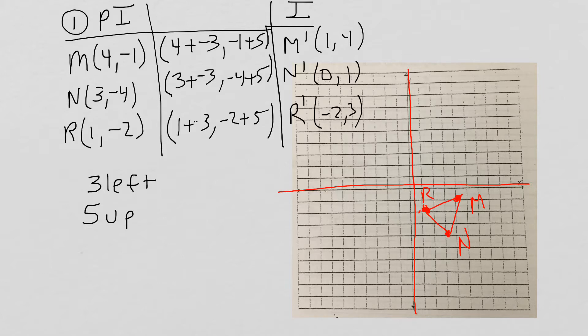Our algebraic expression is x plus negative 3, or you can do x minus 3, and y plus 5. Now what we need to do is go ahead and graph our image.